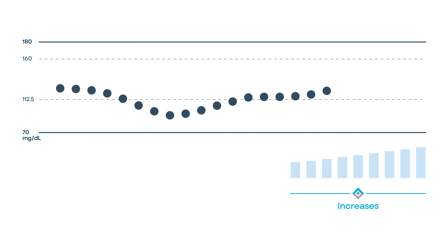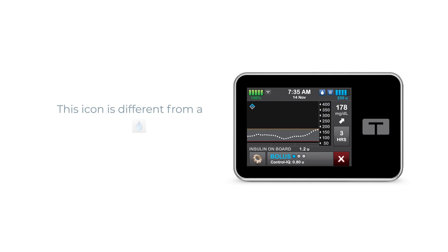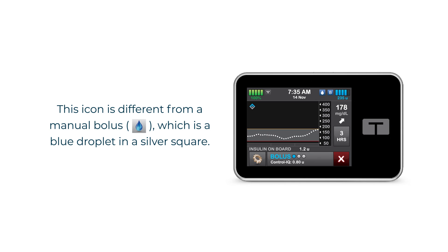When Control IQ technology predicts that your glucose value will be at or above 180 milligrams per deciliter 30 minutes in the future, and when Control IQ technology is either increasing insulin delivery or delivering the max basal rate, the pump will automatically deliver an automatic correction bolus to return you to the target range. When Control IQ technology is delivering an automatic correction bolus, you will see a white droplet in a blue square. This icon is different from a manual bolus, which is a blue droplet in a silver square.